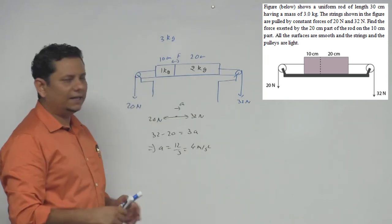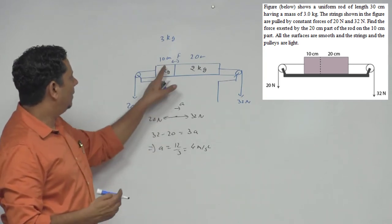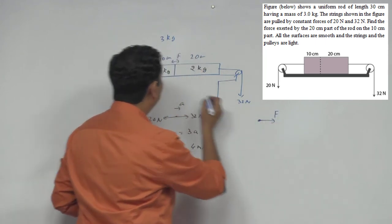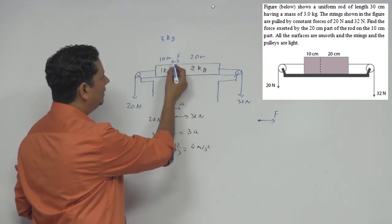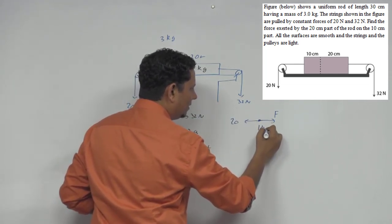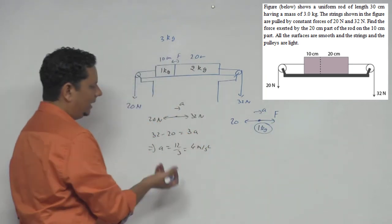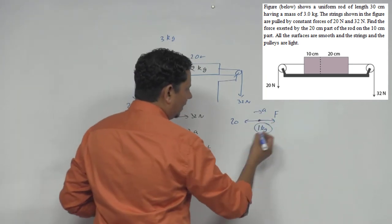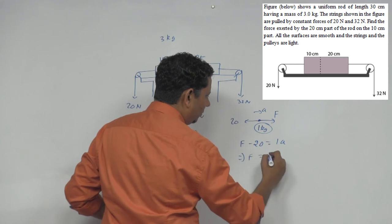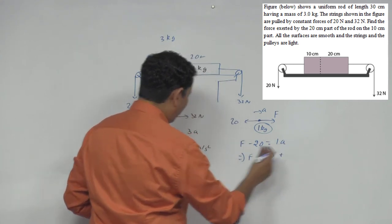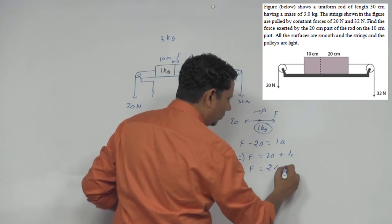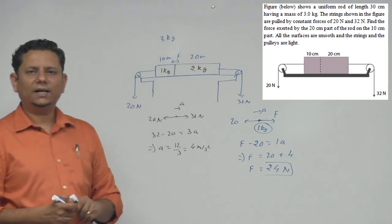Now drawing the FBD of the 1 kg part (10 cm section): the internal force F acts in one direction and the 20 Newton force acts in the other direction. The mass is 1 kg and acceleration is 4 m/s². Applying Newton's second law: F − 20 = 1 × 4, which gives F = 20 + 4 = 24 Newton. So the final answer is 24 Newton.